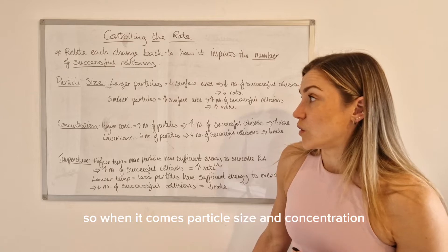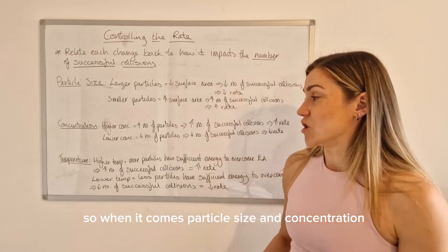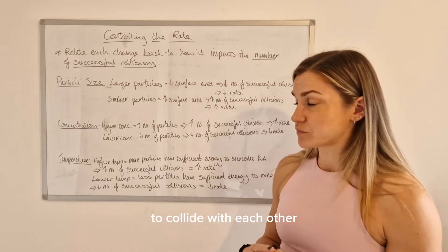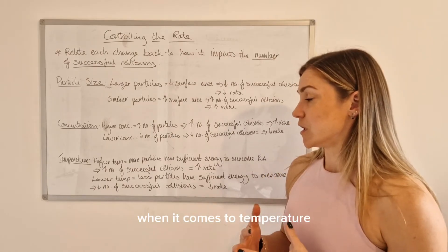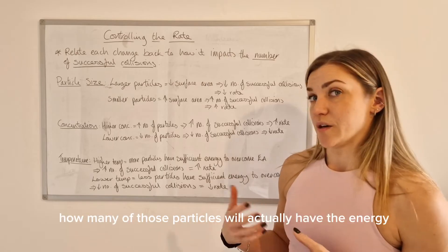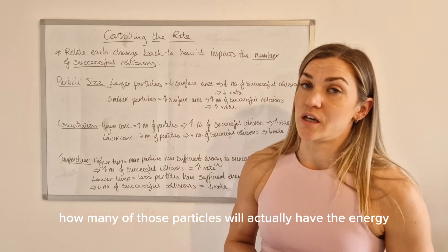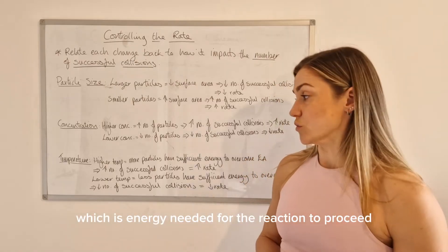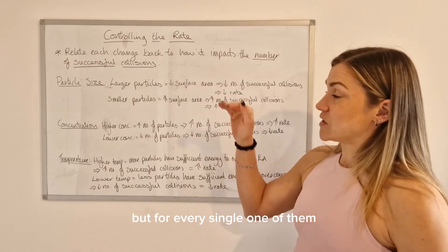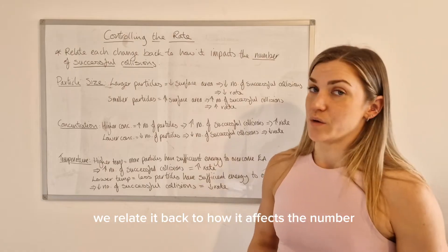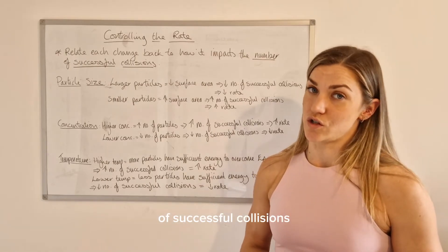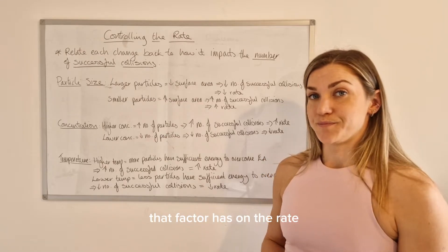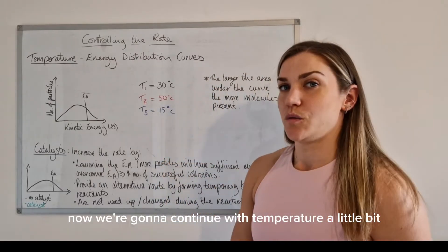For particle size and concentration, it's more to do with how likely the particles are to collide with each other. For temperature, it's more to do with how many of those particles will actually have energy to overcome the activation energy — the energy needed for the reaction to proceed. But for every single factor, we relate it back to how it affects the number of successful collisions when explaining the effect on rate.